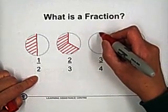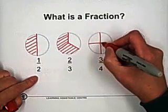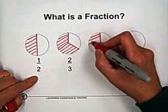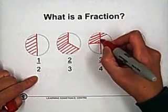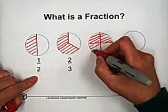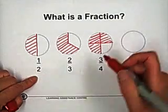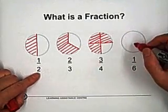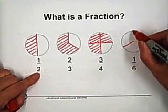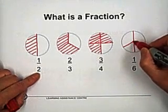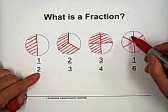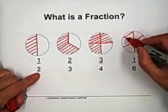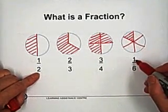If we cut this pie into four equal parts, the total number of equal parts is four. If three parts are selected, that gives three over four. For one-sixth: we have six parts total, and we choose one part. One part is represented by the fraction one over six.